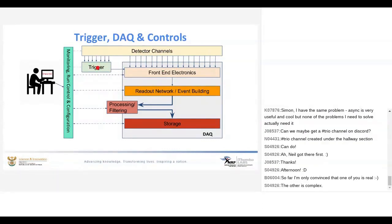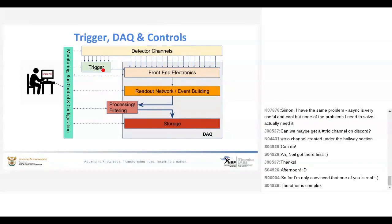A trigger can be as simple as a periodic trigger, like a timer — so every one second or so your front-end electronics will start acquiring data. But in the physics world, since the processes are stochastic and basically unpredictable, there is some complexity that can be put into your trigger. We normally use simple things like comparators, but it can be as complex as having an FPGA module with dedicated logic to determine if the physics is of interest. From the front-end electronics it goes through to your readout network for event building, processing, filtering, and finally to storage.